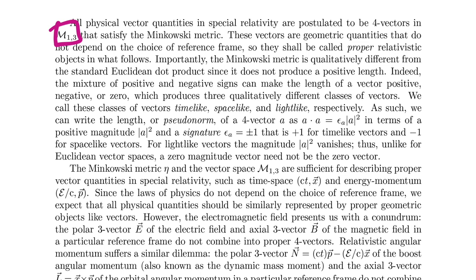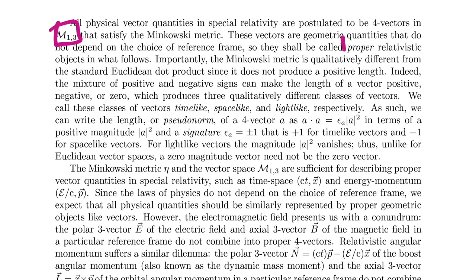These vectors are called geometric quantities because they do not depend on the choice of reference frame. That's the whole deal with special relativity — you want to find those things that are independent of reference frame. As such, without a reference frame, we're going to call them proper relativistic objects. We'll look for this language as we read this paper. Then they talk about how the Minkowski metric differs from the Euclidean metric — we have time-like, space-like, and light-like.